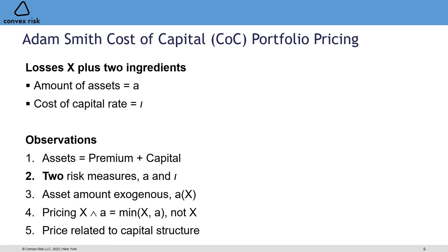Let's translate Adam Smith's model into a cost-of-capital portfolio pricing model in modern terms. We're thinking of a very simple one-period insurance company: it comes into existence at time zero, sells policies, raises premium, raises capital from investors. At time one, losses become known, it pays its losses and distributes residual value to investors. We've got two ingredients: the loss distribution for the policies being written, and an amount of assets A plus a cost-of-capital rate IOTA. Because this company has no legacy assets or liabilities, its assets equal premium plus capital.